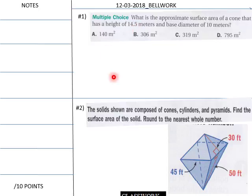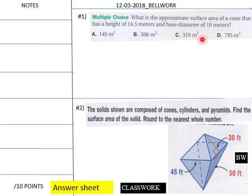Teachers, here is our bellwork for the day. Multiple choice. What is the approximate surface area of a cone? It has a height of 14.5 and a base of 10 meters. And then down here, solids are shown. The solids shown are composed of this finite surface area of the solid here. So we have a solid here round to the nearest whole number. So we have a two-sided pyramid here is what we have.